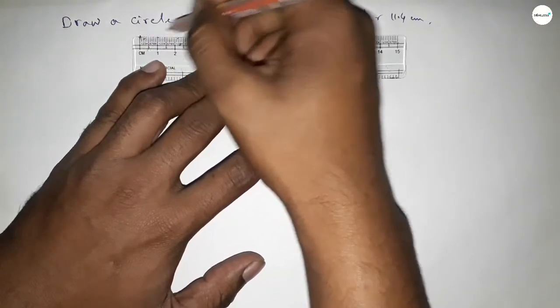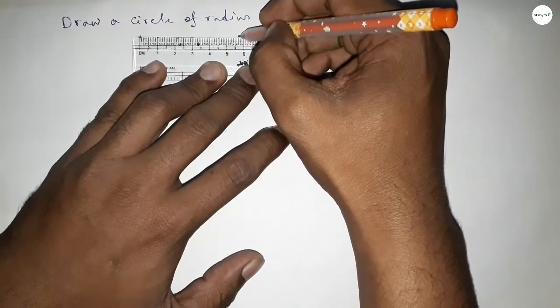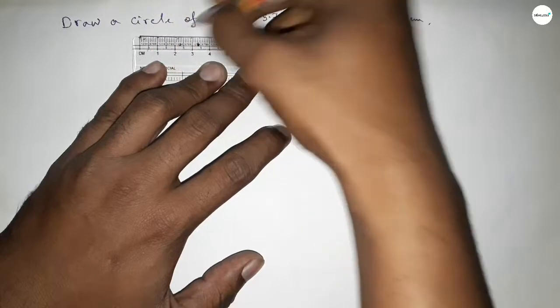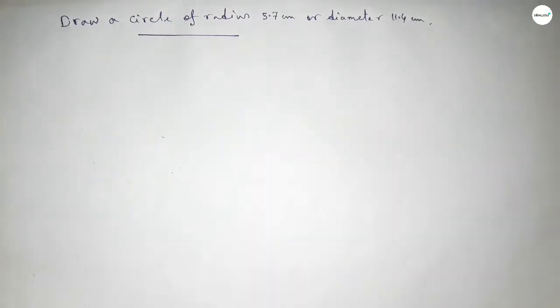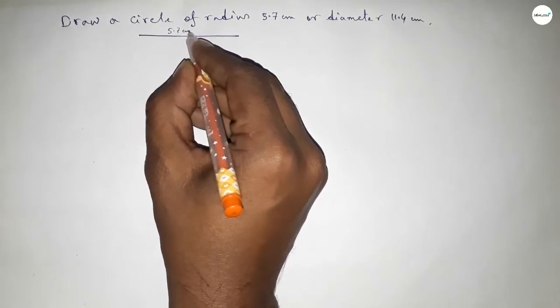Starting from 0, 1, 2, 3, 4, 5, and this is 5.5, 6, 7, so this is 5.7 centimeter. And we know that the radius of a circle is half of the diameter of the circle, so this is 5.7 centimeter.